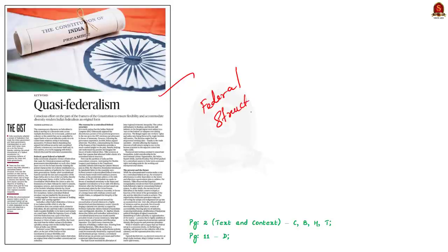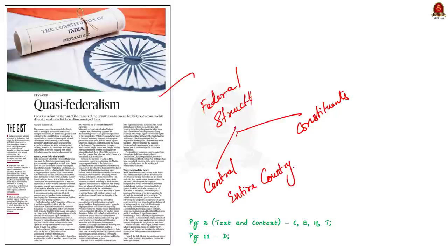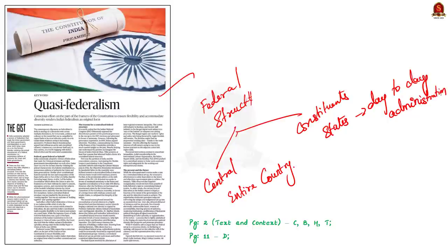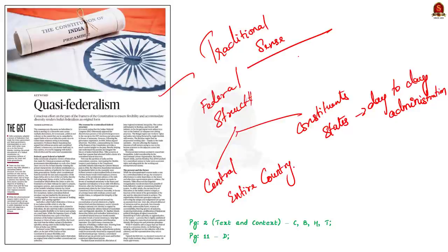Federalism is a form of government in which power is divided between a central authority and various constituent units. Usually, a federation has two levels of government — one for the entire country responsible for subjects of common national interest, and one at the state level dealing with day-to-day administration. Both levels enjoy power independent of each other in traditional federalism. However, India adopted a unique form: in Indian federalism, the levels are not independent but interdependent, with a bias towards the center — called centralized federalism.